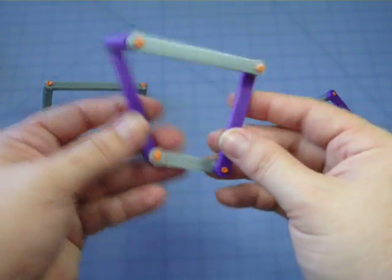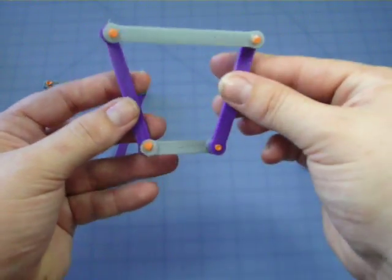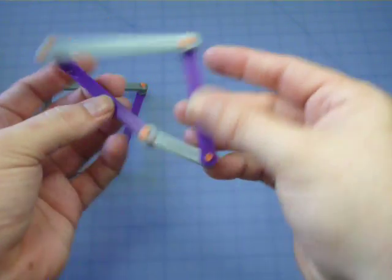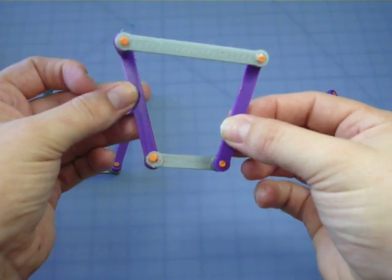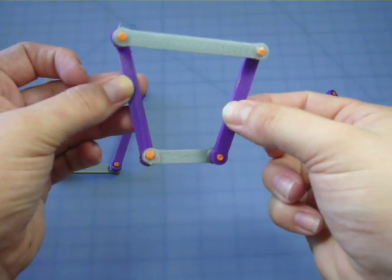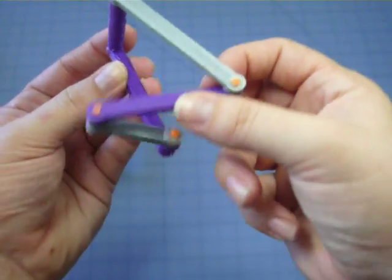The second one, you see we've got the crank link and the ground link, the one on the bottom. This one is the second longest one, so the motion's going to be a little bit different.